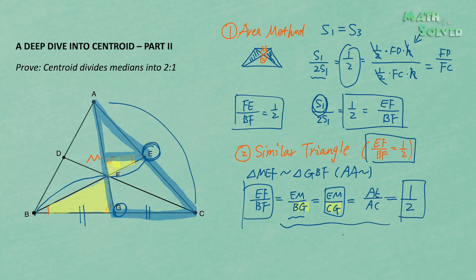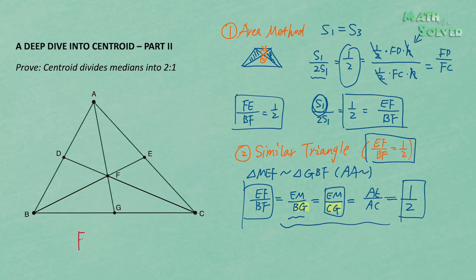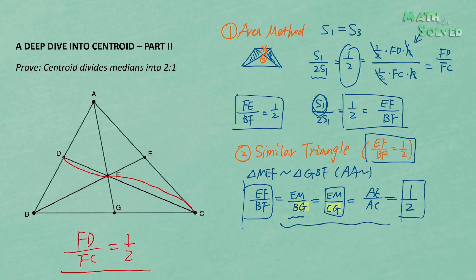That completes the proof using similar triangles. As a question for viewers: if you want to prove FD over FC equals 1 over 2 using similar triangles, how should you draw the auxiliary line? Put your ideas in the comments. In the next video, we will show three examples of how to apply this property in problem solving. Thank you for watching — see you next time.